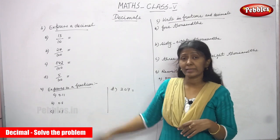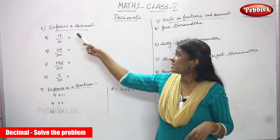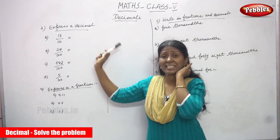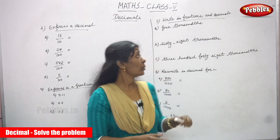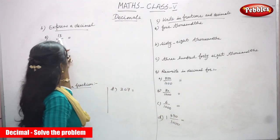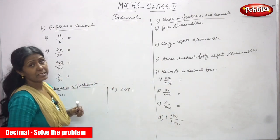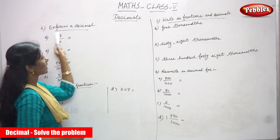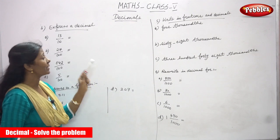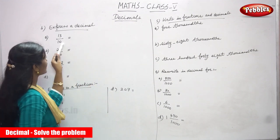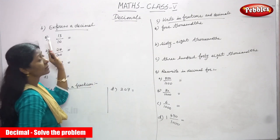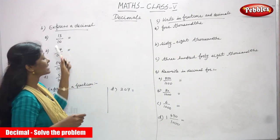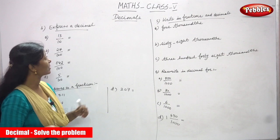Now we are going to solve the sums. Express as a decimal. Look at the sum: 13 by 10. This is a fraction, so you have to convert it to decimal. 13 is the numerator and 10 is the denominator.